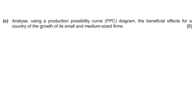Now let's have a look at a past paper question on the PPC curve. It says: analyze, using a production possibility curve (PPC) diagram, the beneficial effects for a country of the growth of its small and medium sized firms. This question is worth 6 marks — 4 marks for the diagram and 2 marks for a short explanation.